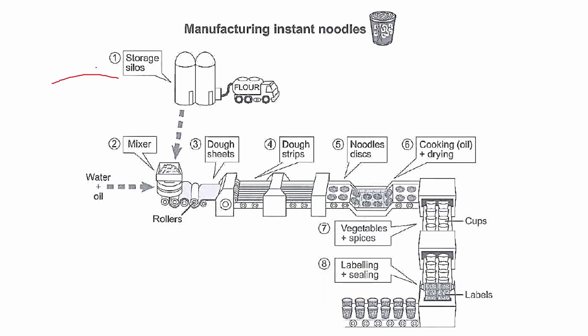All right, so let's start with step 1, storage silos. Flour is transferred from silos to the factories. Step 2, mixer. They mix flour with water and oil using a mixer, a machine, to produce dough and the rollers turn it into sheets. And after that, the machine turns into strips and then they're put into noodles discs.